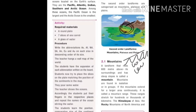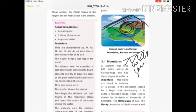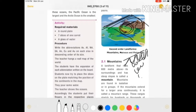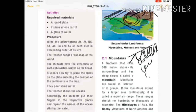A landform with a steep slope is called a mountain. Mountains are found in isolation or in groups. If a mountain extends over a large area continuously, it is called a mountain ridge. Mountain ranges stretch from hundreds to thousands of kilometers.